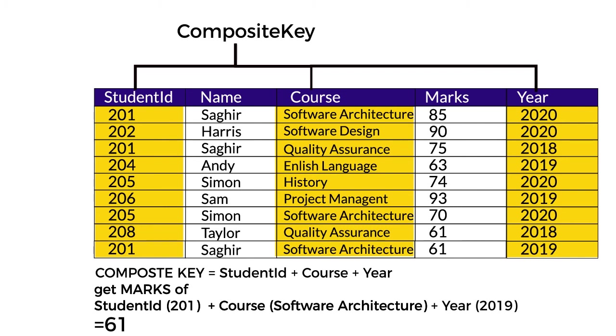That's how composite key works. It is the unique identifier used when there is no chance that one column alone can uniquely identify a record.